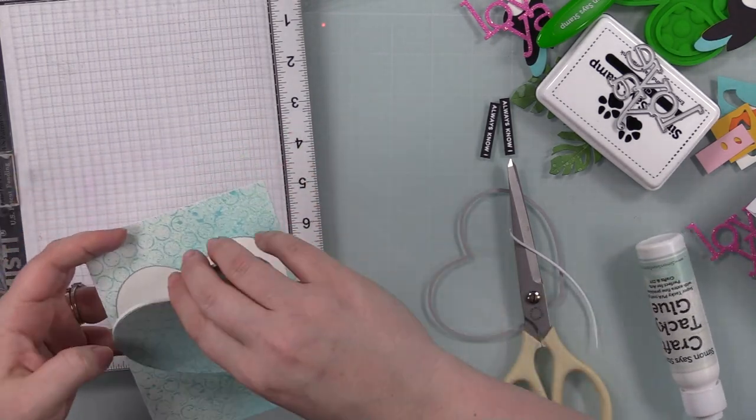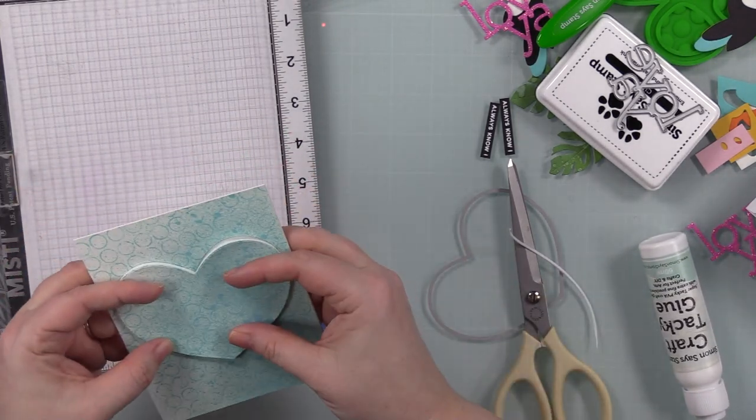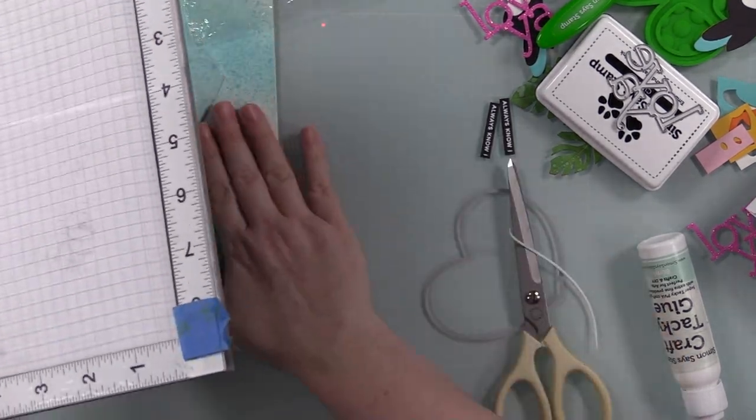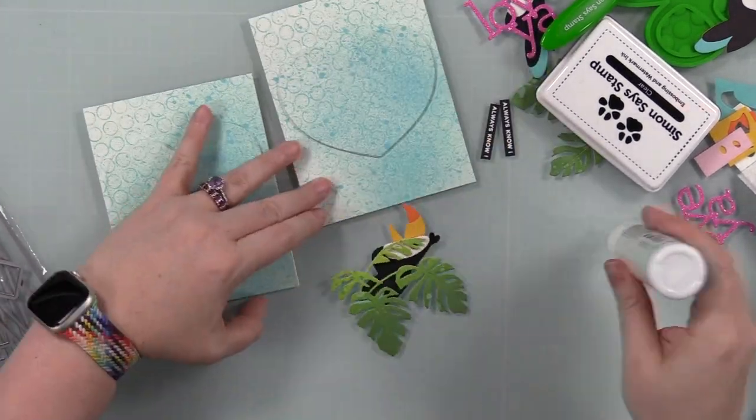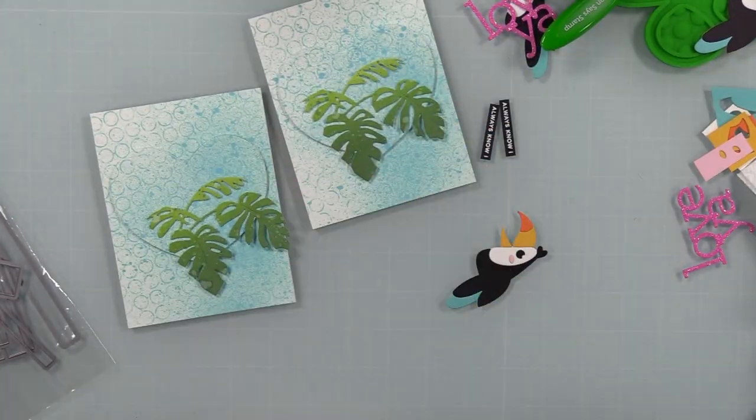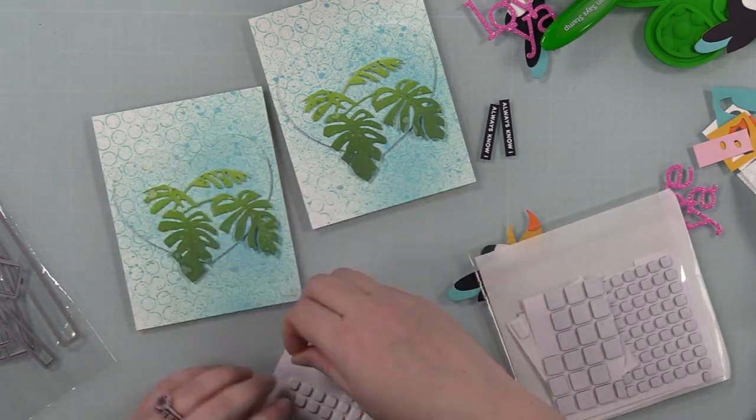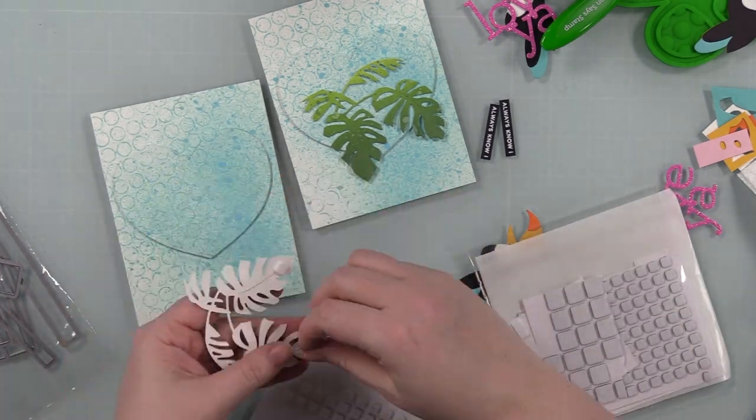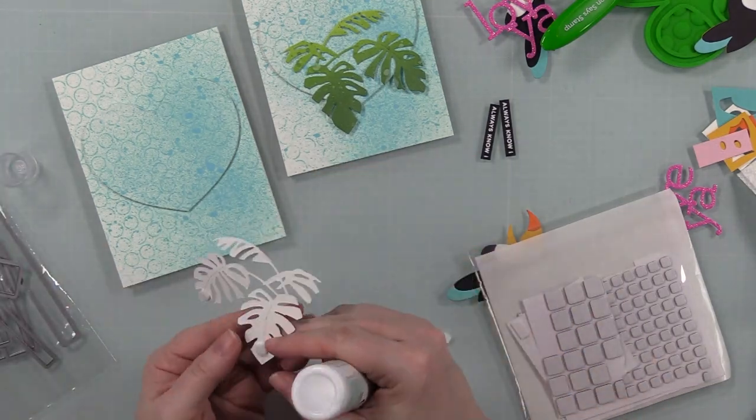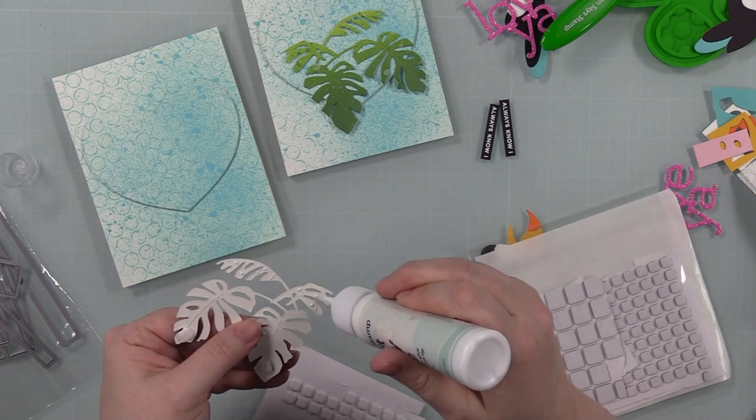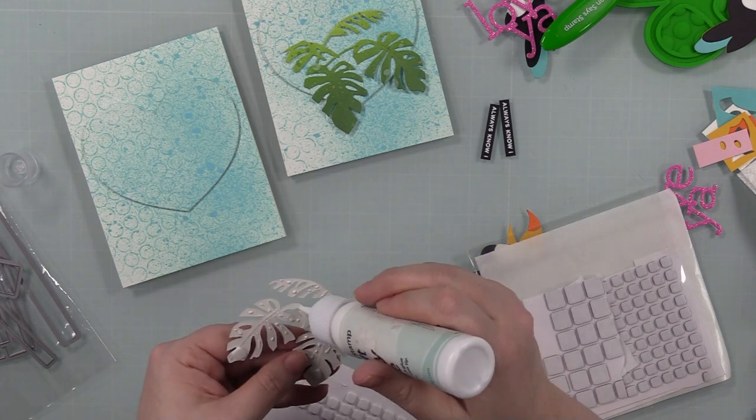Once those are adhered into place, now we're going to start assembling all these different elements to make the cards. Those tropical leaf bunch wafer dies, the bottom parts of those leaves kind of hang over the hearts, so I put just some little foam squares behind those and then just used craft tacky glue on the rest of them, just little dots here and there.